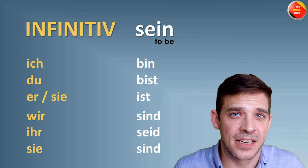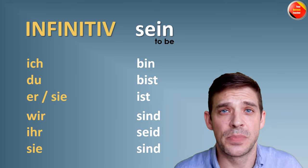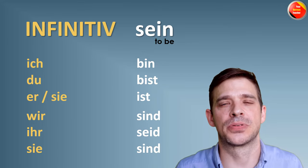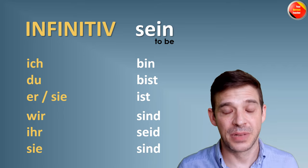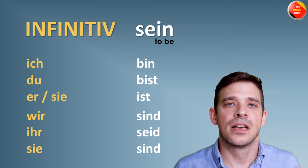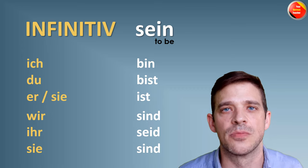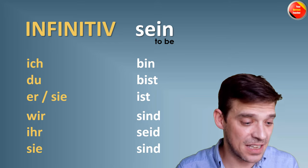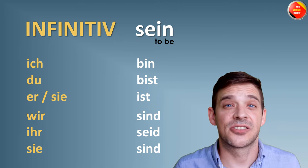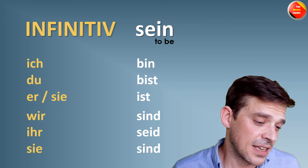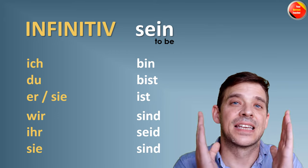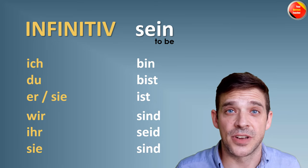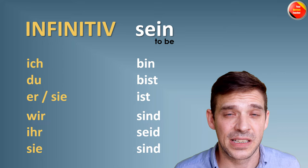The first verb we're gonna do is SEIN — to be in English. SEIN is the most important verb in German. You have to know it anytime. You have to use it at any point in present time, and especially later in present perfect, you're gonna use it a lot. So please, this verb you have to know during sleep. It's completely irregular.